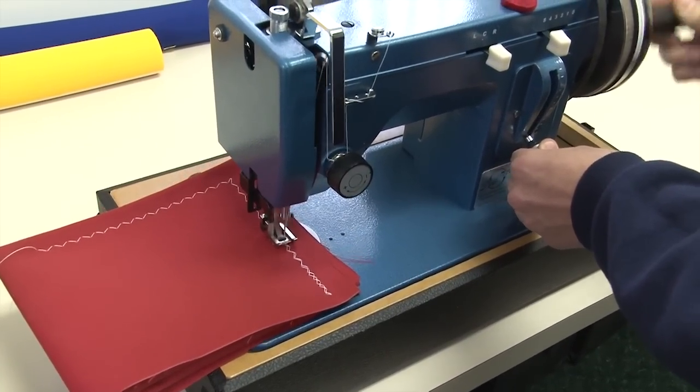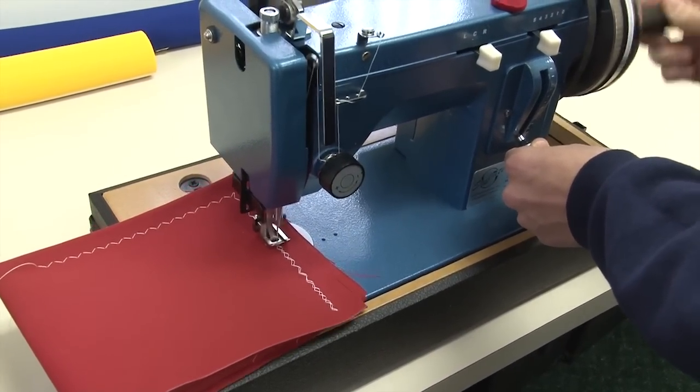When sewing in reverse, use the reverse lever. The balance wheel should always turn towards you as indicated by the labels we've placed on the Monster 2 balance wheel.